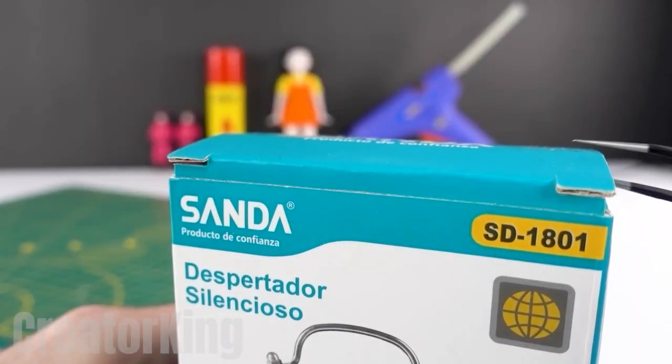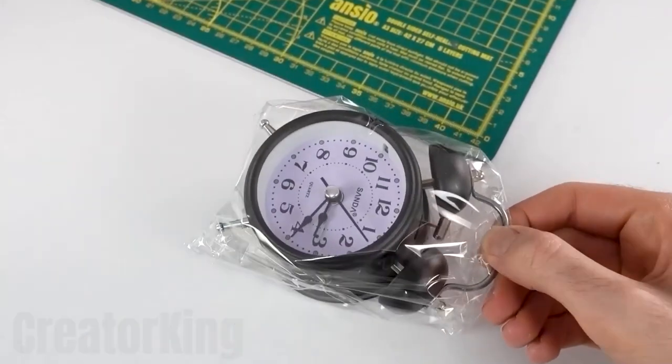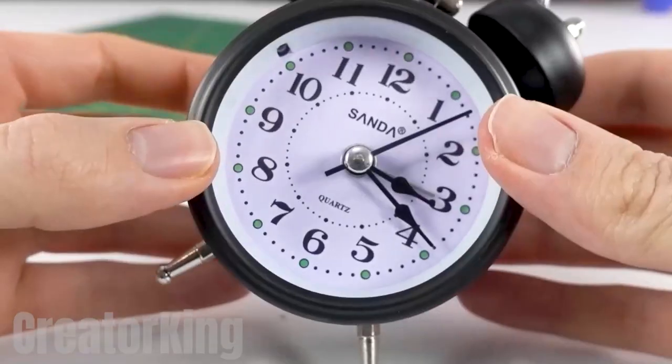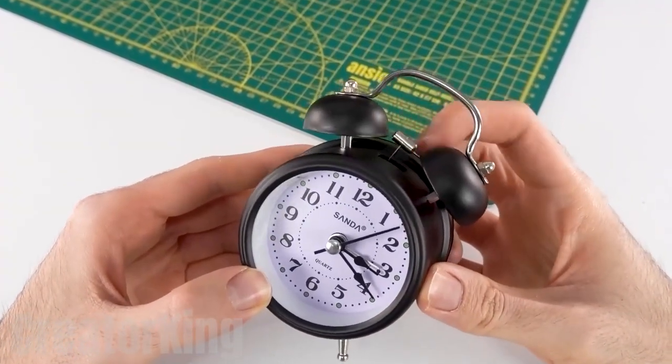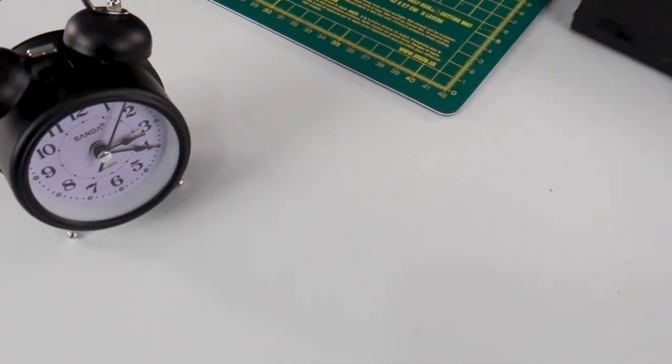To create this effective Squid Game themed alarm clock, we obviously need an alarm clock. Any brand and quality will work as long as it does what it's supposed to. We'll have to manipulate its interior, so the first thing will be to remove the screws and open it to see its insides.